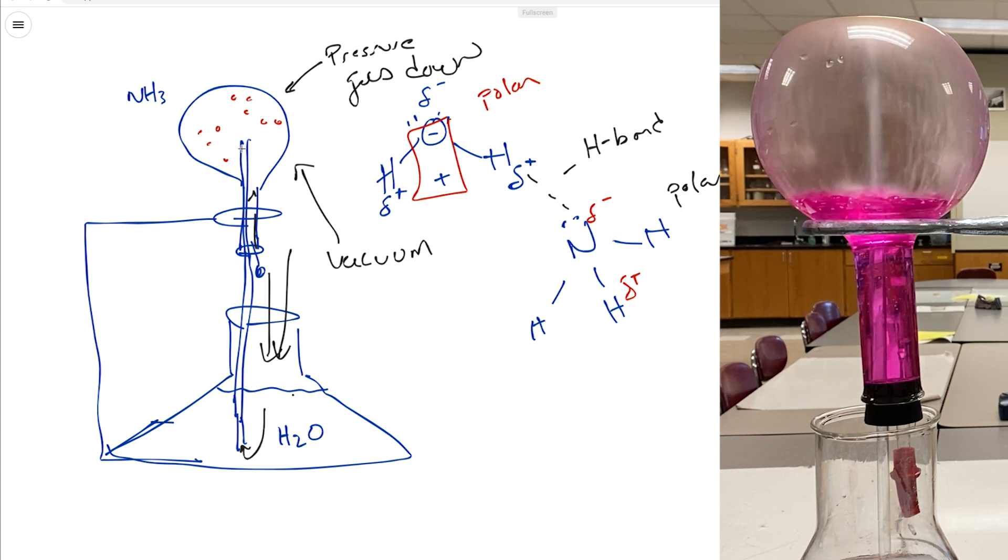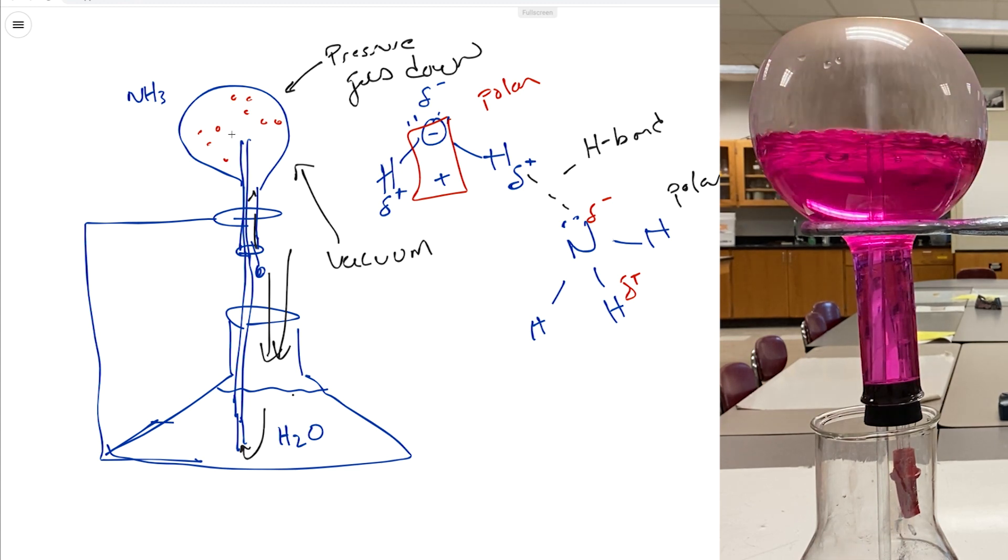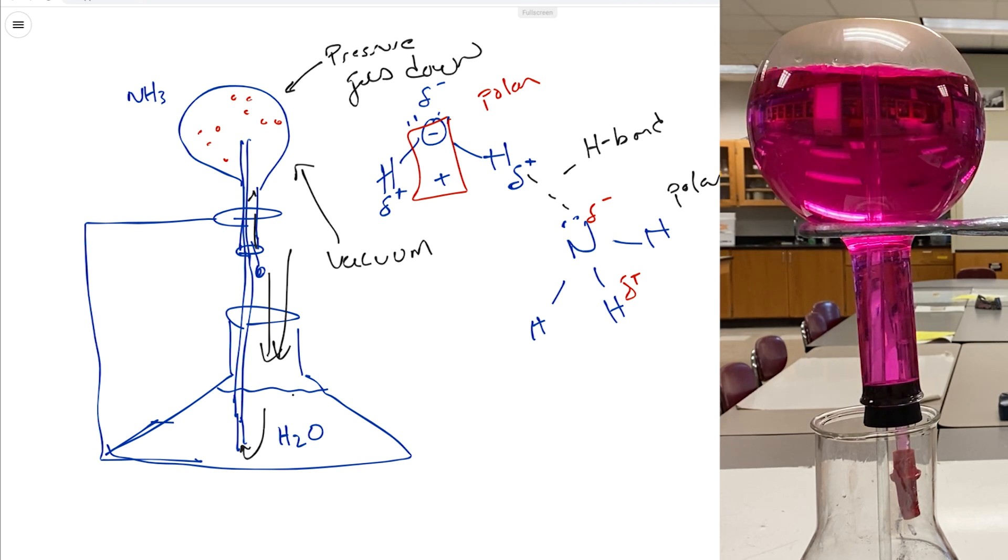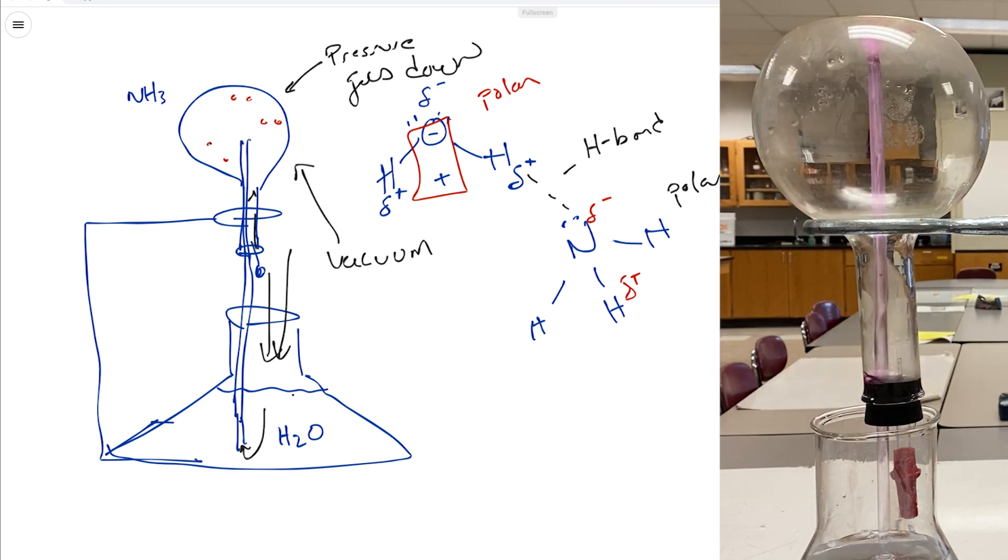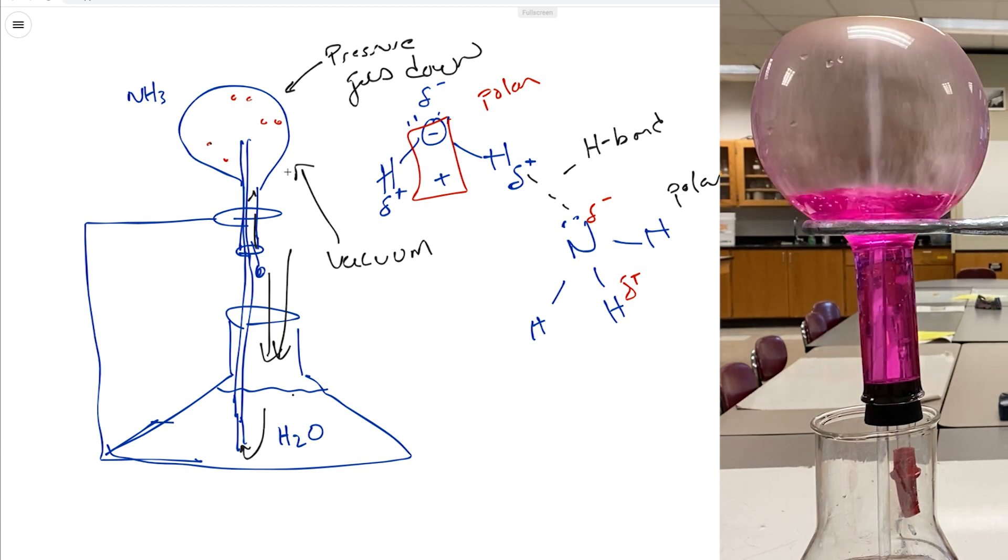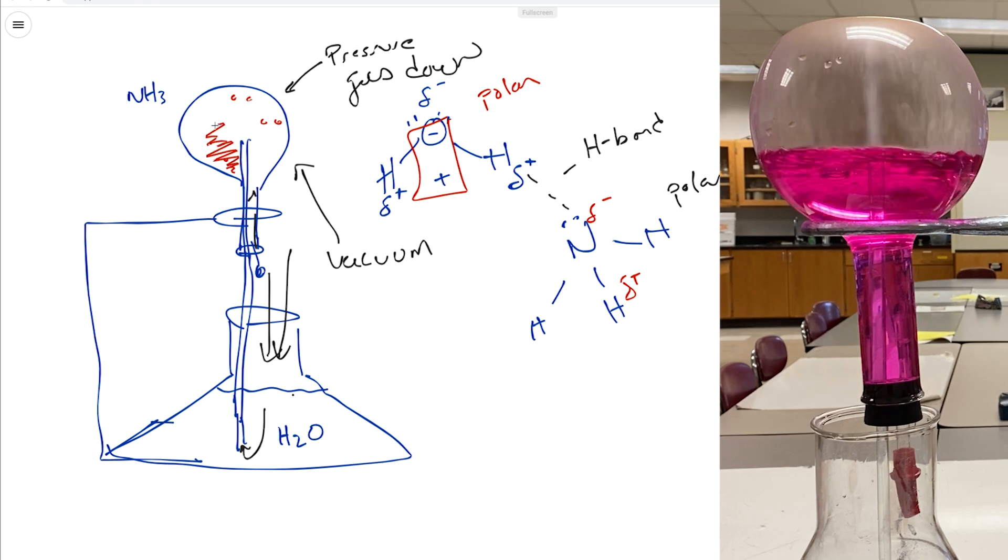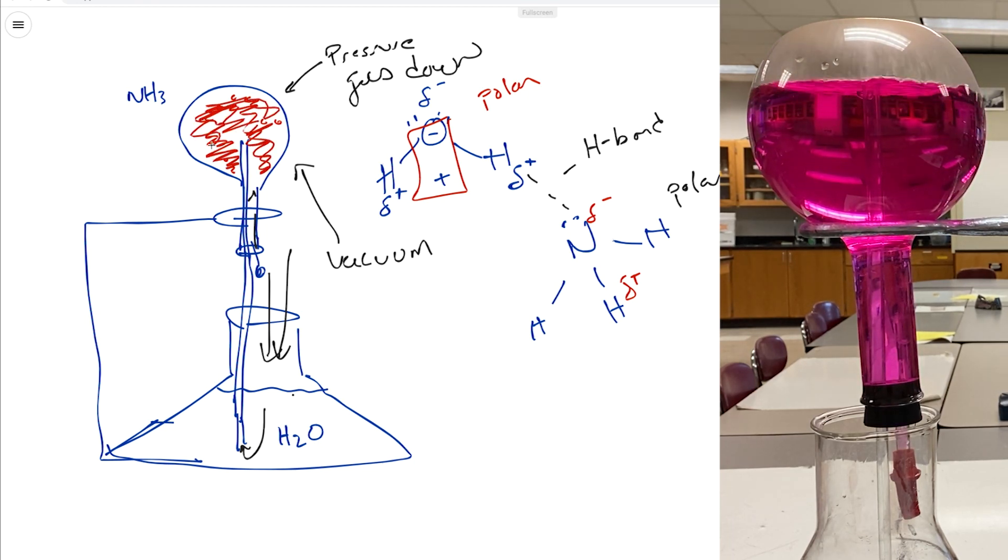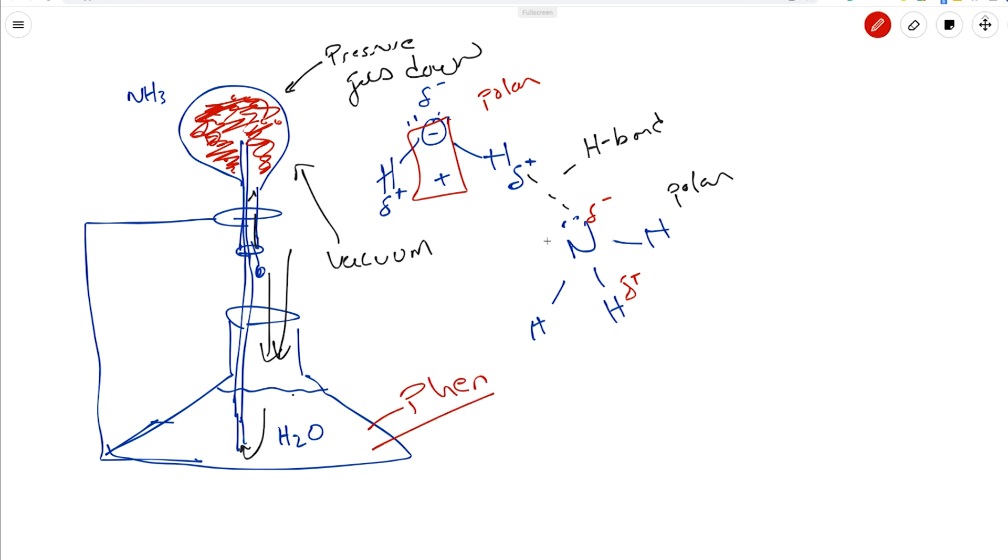Because now there's lots and lots of water for it to dissolve into, and the reds go away fast, fast, fast. And of course eventually this whole thing fills up with the phenolphthalein-embedded water. Remember, there's phenolphthalein down here, and that's how ammonia fountain works.